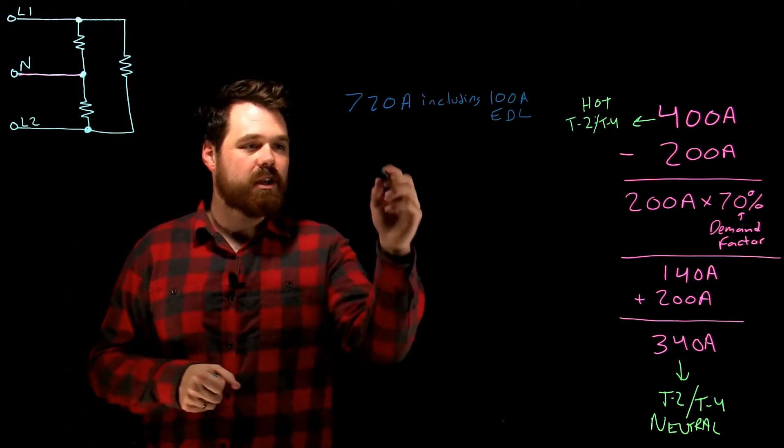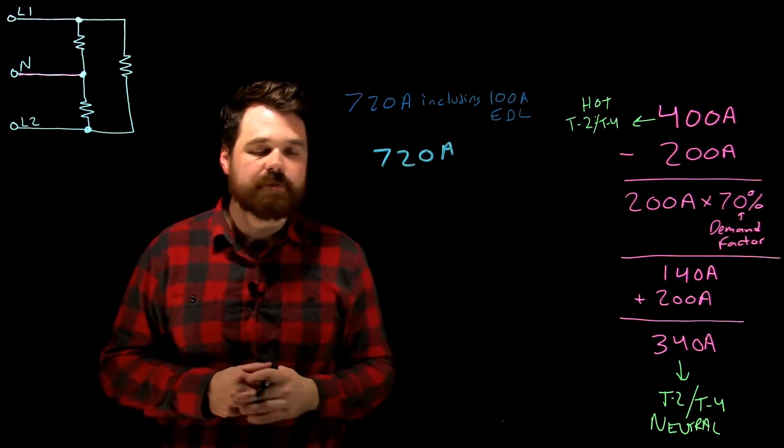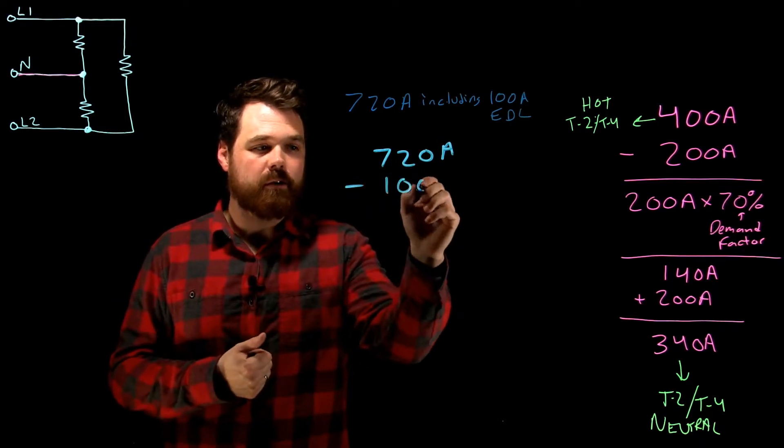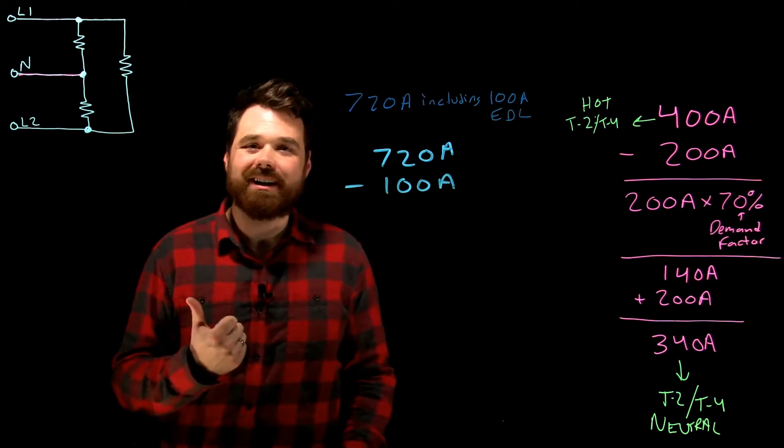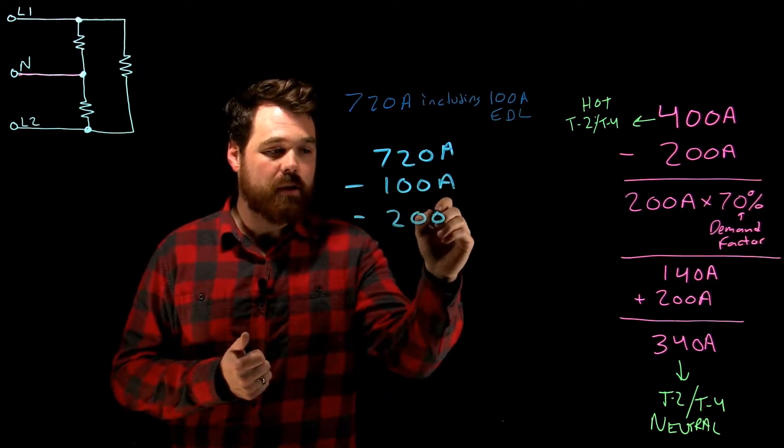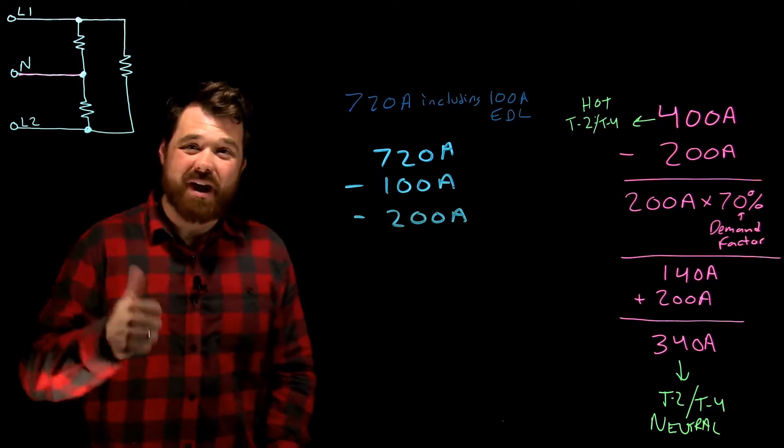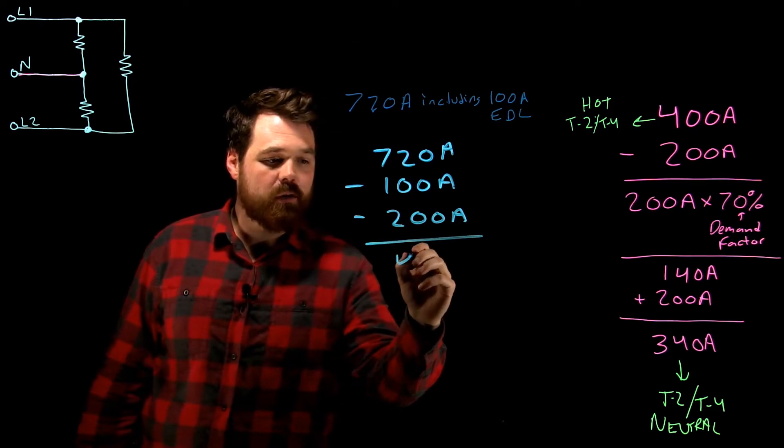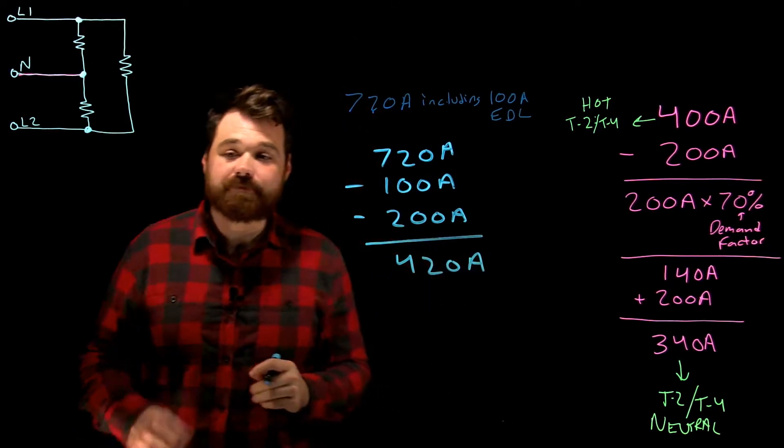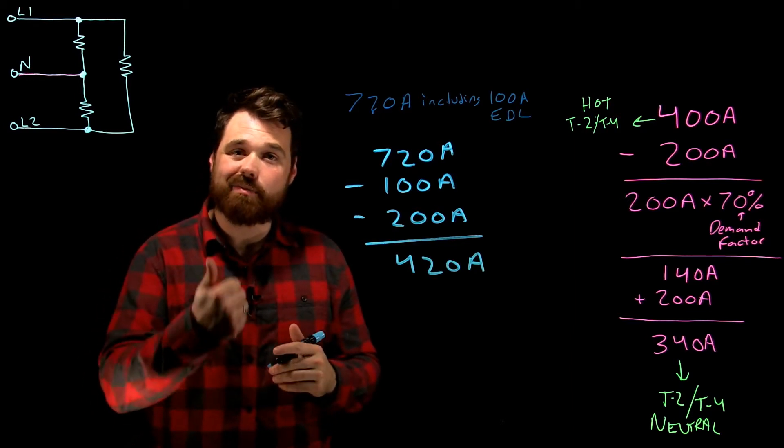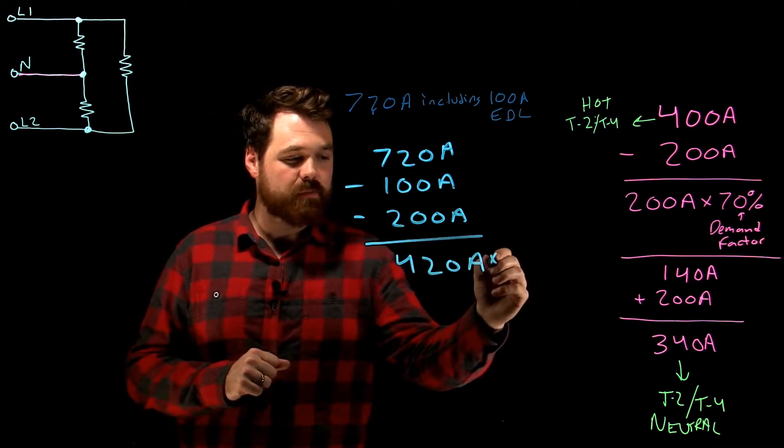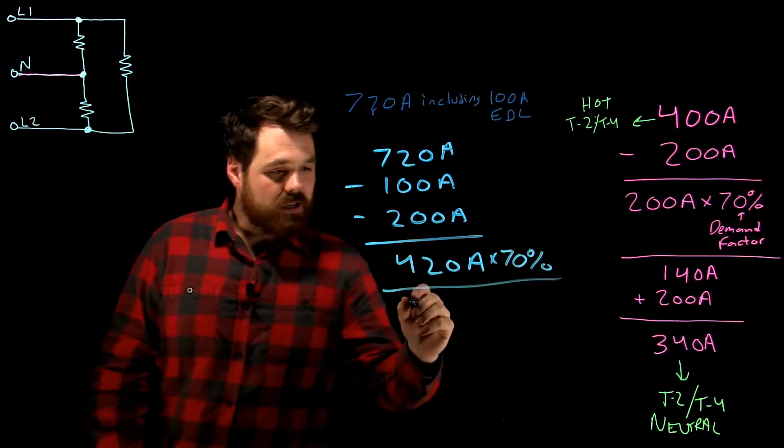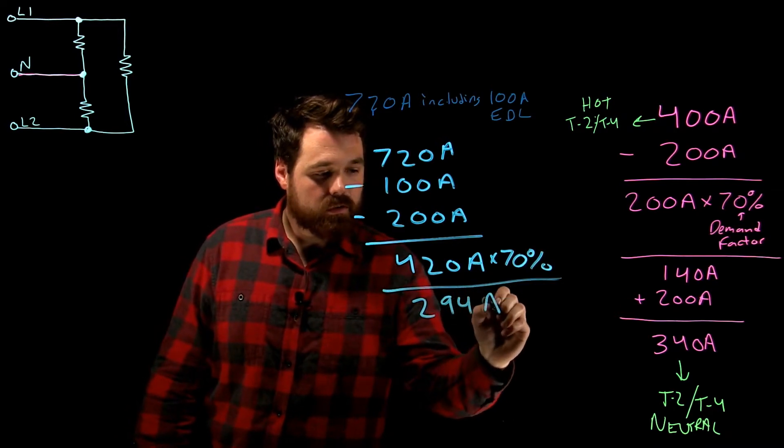So if that was the situation and I had that, what I would have to do is I would take my 720 amps, right? I cannot apply a demand factor to my electric discharge lighting, so I'm going to minus my 100 amps of electric discharge lighting. I'm also going to minus that 200 amps, which I cannot apply a demand factor to. That's going to give me in this case 420 amps. Now this 420 amps is what I can apply a demand factor to. So I'm going to multiply it by 70%, which gives me in this case 294 amps.